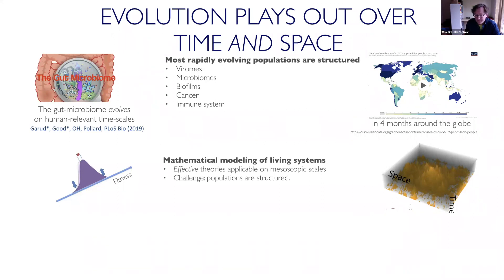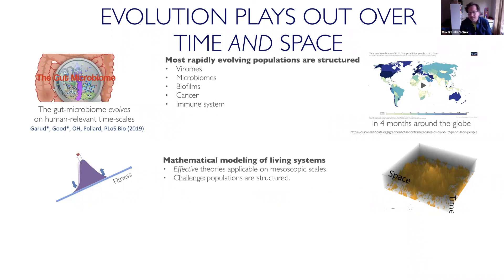Such effective theories have been highly successful in physics, where we explain systems of many degrees of freedom with just a few effective parameters in statistical physics. Effective theories have also been successful in biology, widely in biophysics, and also in evolution when it comes to populations that are unstructured — completely well-mixed. Even in epidemiology, when you have a local well-mixed population and a new virus comes in, at first it spreads exponentially. That's a simple theory, but a pretty decent one, and sometimes it works quite well.